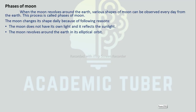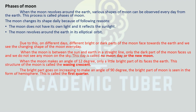Phases of the Moon: When the Moon revolves around the Earth, various shapes of the Moon can be observed every day from the Earth — this process is called the phases of the Moon. The Moon's shape appears to change daily because: the Moon does not have its own light and only reflects sunlight, and as the Moon revolves around the Earth in its elliptical orbit, different bright or dark parts of the Moon face the Earth on different days. When the Moon is between the Sun and the Earth in a straight line, only the dark part of the Moon faces us and we do not see any moon in the sky — this day is called the No Moon Day or New Moon Day.